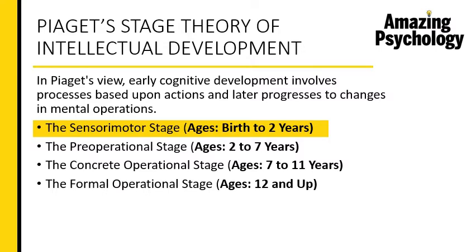According to Piaget, early cognitive development involves processes based upon actions, and these later progress to changes in mental operations. People first develop their understanding through actions in their environment, and this later progresses to mental workings and understandings based on those actions.